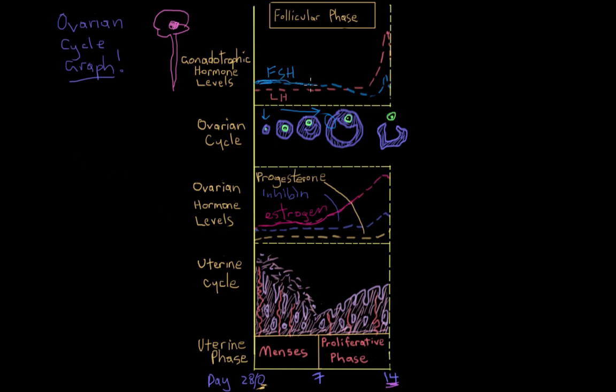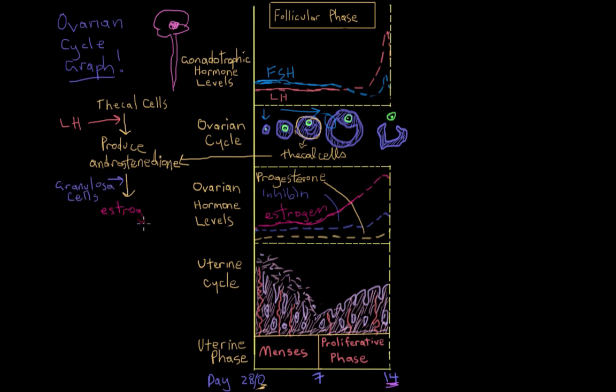And to add to that, besides what FSH is doing, luteinizing hormone is making the thecal cells that surround the follicle produce a hormone called androstenedione. Androstenedione is really similar in structure to estrogen. And actually the granulosa cells get a hold of that androstenedione and convert it to actual estrogen. So the estrogen levels are just going way up. And you can see that reflected here. So as the follicles grow, the estrogen level is just going way up.